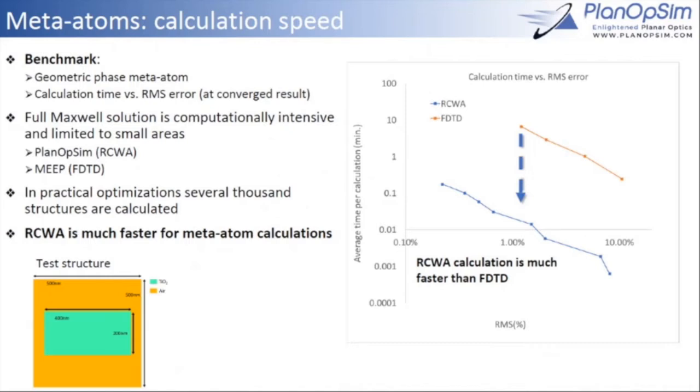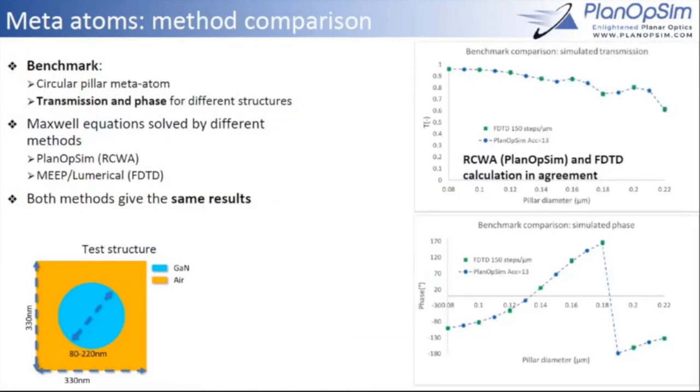We've benchmarked it, and it turns out that for this set of problems, not for any problem, but for this set of problems like this reference and a structure that we see on the right, RCWA solver turns out to be an order of magnitude faster than FDTD calculations.